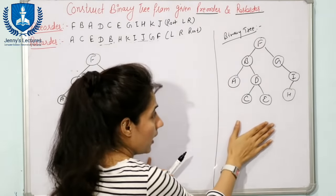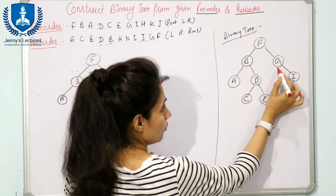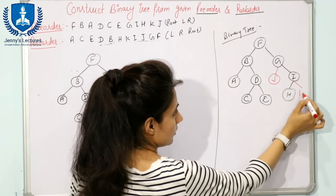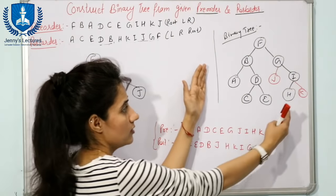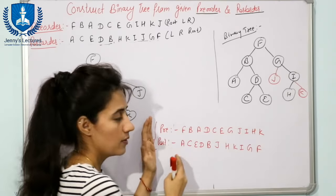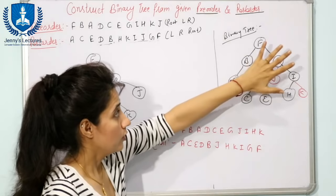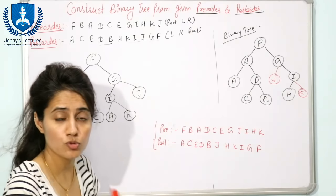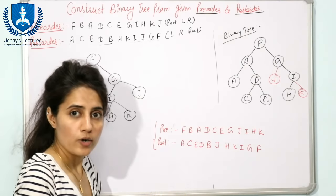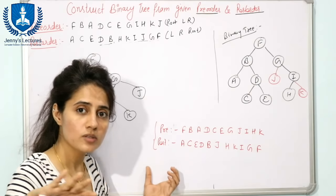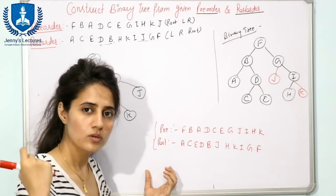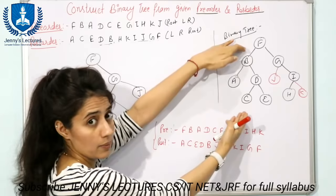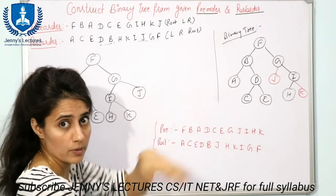As a third exercise: if you make the original binary tree a full binary tree by inserting J and K in different positions, the pre-order and post-order will be different. Try to construct the binary tree from that pre-order and post-order using both the trick and the full method, and let me know in the comments whether you find the same binary tree.